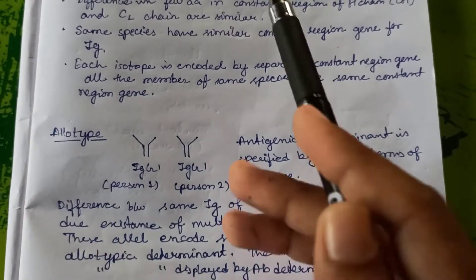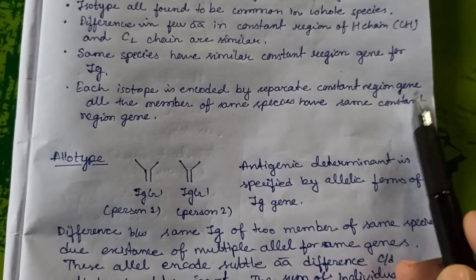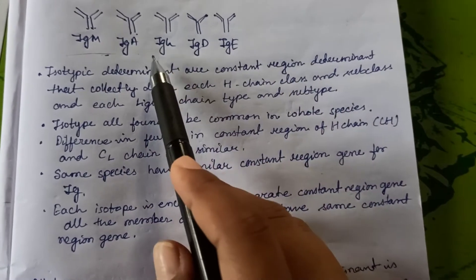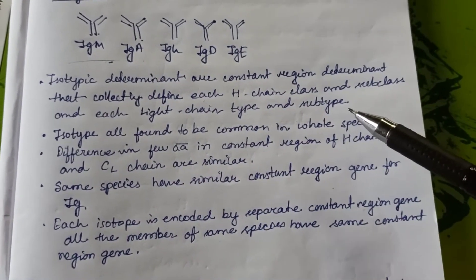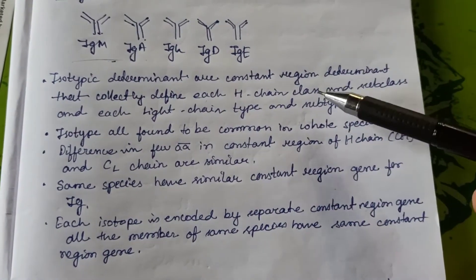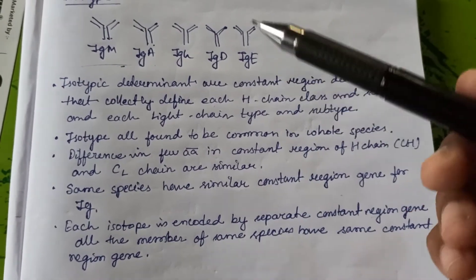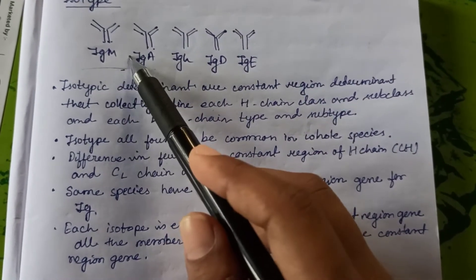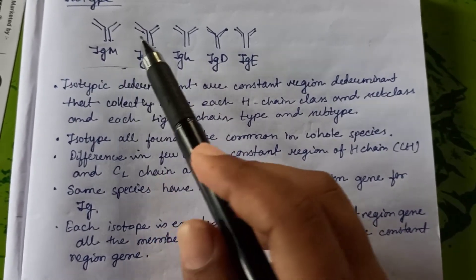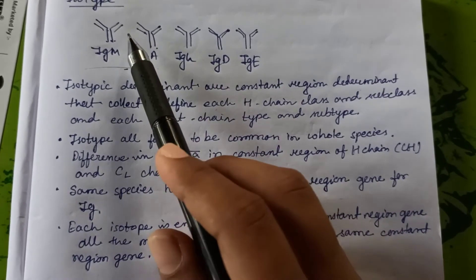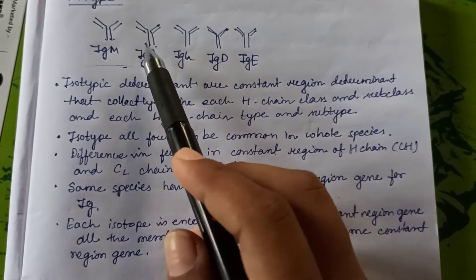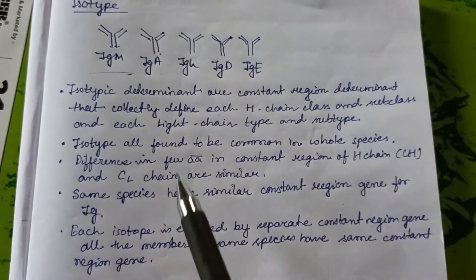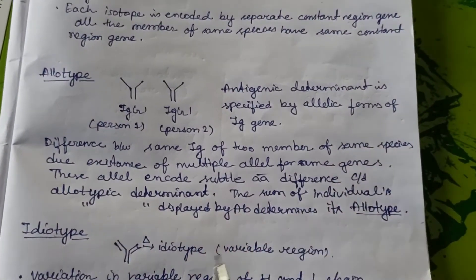Each isotype is encoded by a separate constant region gene. However, if we consider the whole species, all members of the same species have the same constant region gene. For example, my IgM and your IgM are similar, but within an individual, IgM and IgA differ due to amino acid differences in the constant region of the heavy chain, while the constant region of the light chain remains similar.